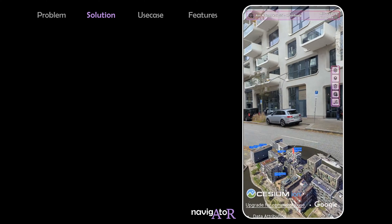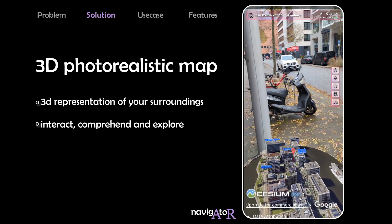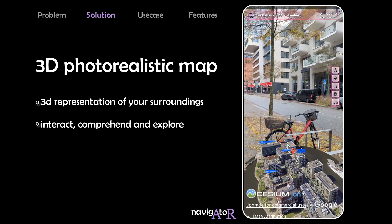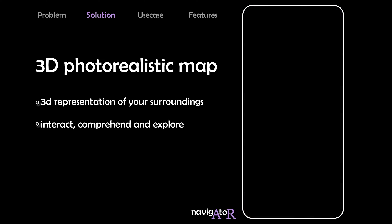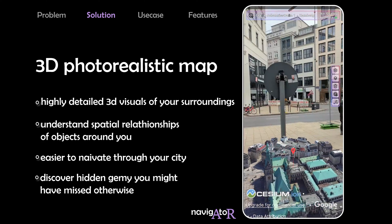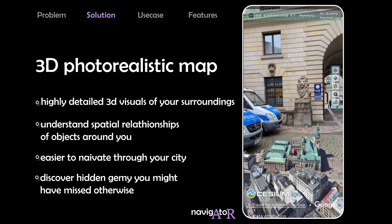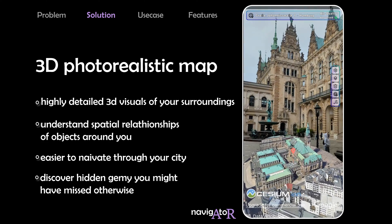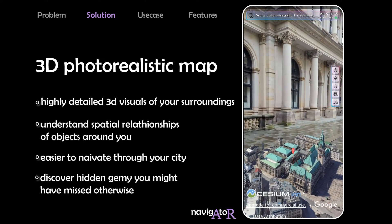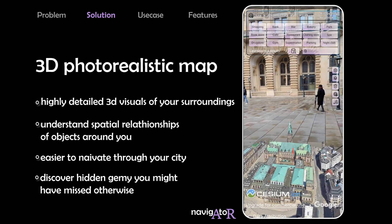Navigator is solving these issues by providing a three-dimensional representation of your surroundings, allowing you to interact with, comprehend, and explore the world around you in a whole new way. This map is using Google's photorealistic 3D tiles, offering you a highly detailed 3D map of your surroundings. This representation allows you to understand the spatial relationship between objects, making it easier to navigate and discover hidden gems you might have missed otherwise.